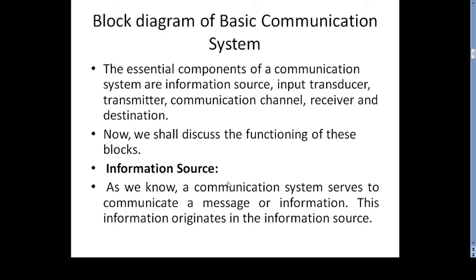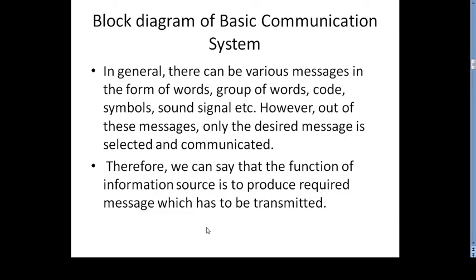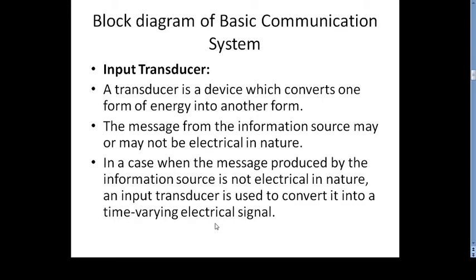The first block is the information source. A communication system serves to communicate a message or information, which originates from the information source. In general, there can be various messages in the form of words, group of words, code symbols, or sound signals. Out of these messages, only the desired message is selected and communicated. The function of the information source is to produce the required message which is to be transmitted through the channel.